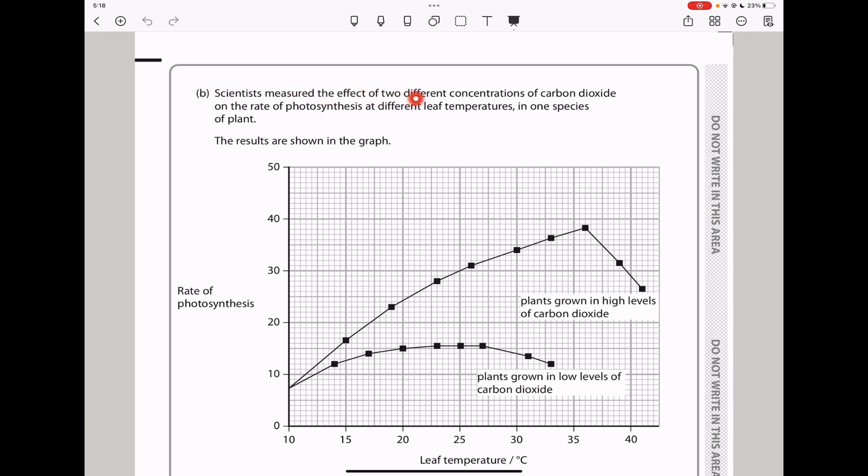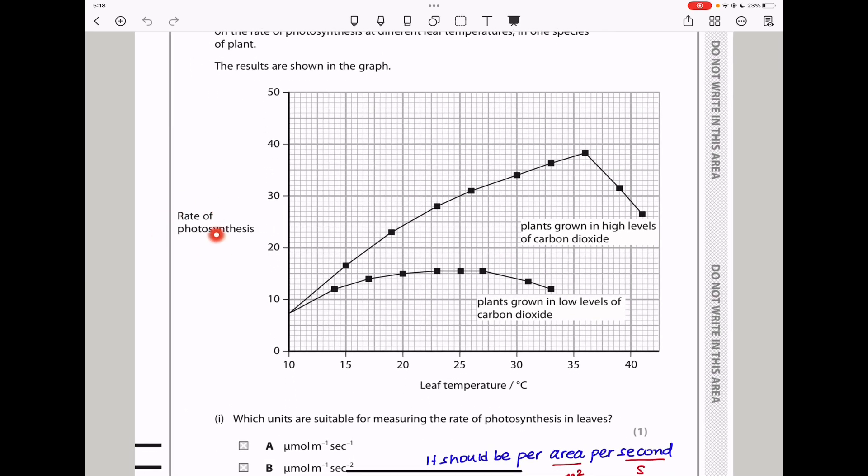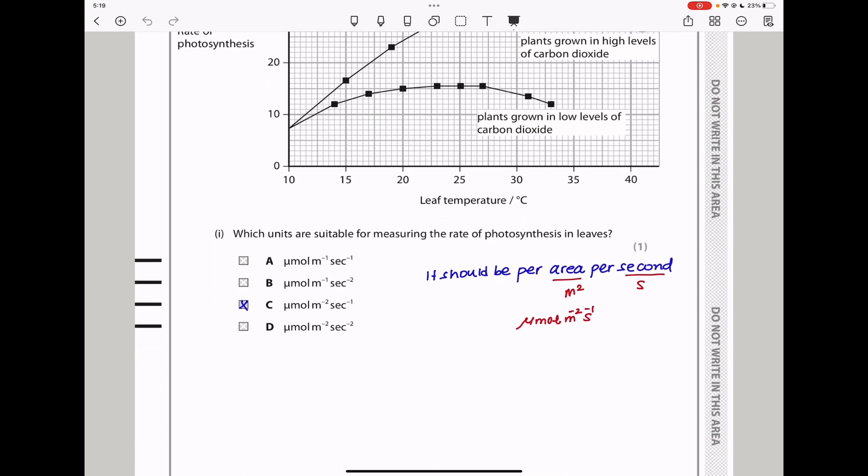Next page. Part B says scientists measure the effect of two different concentrations of carbon dioxide on the rate of photosynthesis at different leaf temperatures in one species of plant. The results are shown in the graph. Here we can see the rate of photosynthesis on the vertical axis, and down we can see the leaf temperature. These are plants grown in low levels of carbon dioxide and plants grown in high levels of carbon dioxide. For plants grown in high levels of carbon dioxide, as the leaf temperature increases, the rate of photosynthesis increases more than those in lower levels of carbon dioxide. The first question says which units are suitable for measuring the rate of photosynthesis in leaves? Because it depends on the surface area of the leaf that has been exposed, the units should be per area per second. I said micromole per area per second, whereby area is meter squared per second, or which is time. So the answer should be C.